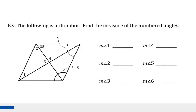Now let's give this example a try. Please pause the video and try it on your own, and then watch me do it. The following polygon is a rhombus. Find the measure of the numbered angles. Looking at our polygon, let's think back to the rules we just learned. First, four congruent sides — that doesn't help us because we're only talking about angles.